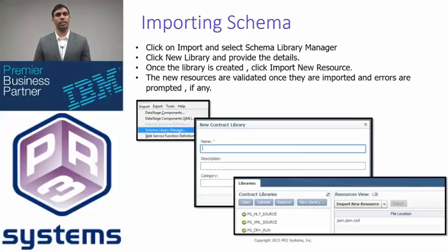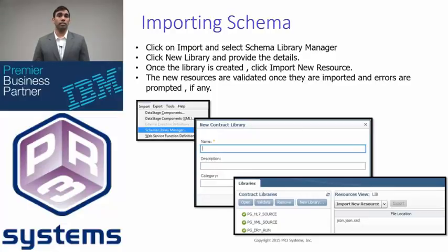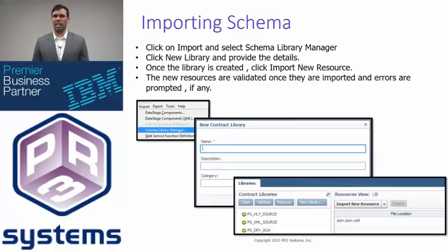As I talked about before, this is the schema library manager. In the schema library manager, you'll find that in the imports tab. Once we do that, we'll want to create a new library. In that library, we're going to want to import that schema file. This library is very useful because once you import it, it'll validate it — it'll either give you an error message or a success message. When you see the error message, it's because your schema file wasn't configured correctly. If you see a success message, that means we are good to go and we can start working on the actual XML file.